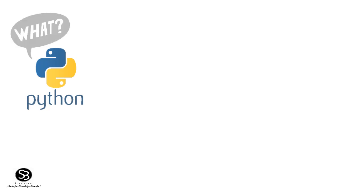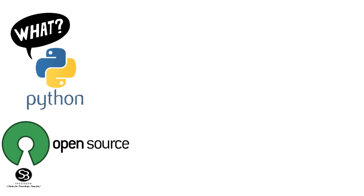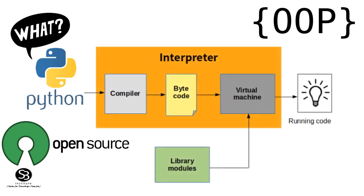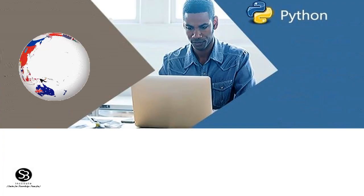Python is a computer programming language. It is a general purpose, open source software that is freely available. It is object-oriented — like C++ and Java — and interpreted. That's why Python's coding is simple compared to C++ and Java. There are a lot of developers.